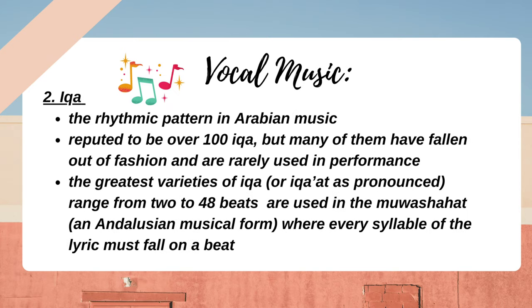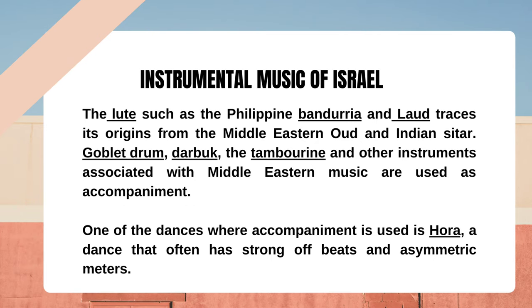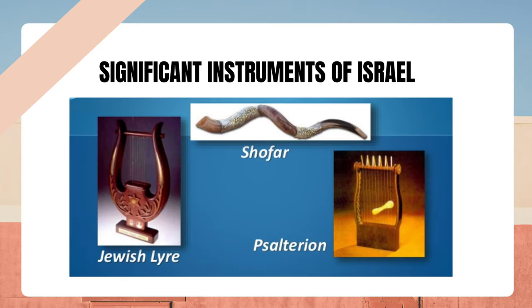Arabian rhythmic patterns: 1. Wazn, literally meaning measure, performed on the goblet drum, frame drum, and kettle drum, and only used in musical genres with a fixed rhythmic temporal organization including recurring measures, motifs, and pulse. 2. Iqa — the rhythmic pattern in Arabian music. Reputed to be over 100 iqaat, but many have fallen out of fashion. The greatest varieties range from 2 to 48 beats and are used in the Muwashshah, an Andalusian musical form where every syllable of the lyric must fall on a beat. Instrumental music of Israel: The lute traces its origins from the Middle Eastern Ud and Indian sitar. The goblet drum (darbuka), tambourine and other instruments associated with Middle Eastern music are used as accompaniment. One of the dances where accompaniment is used is Hora, a dance with strong off-beats and asymmetric meters.